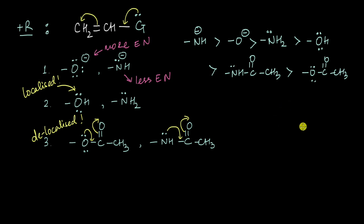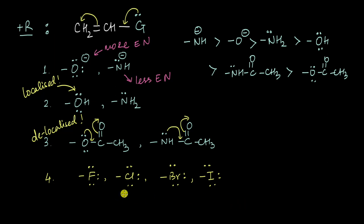Let's take one final example: the halogens. Halogens are highly electronegative — fluorine is in fact the most electronegative element in the periodic table — so these electrons are very tightly bound to the fluorine atom. Therefore, the plus-R effect of fluorine is relatively poor.